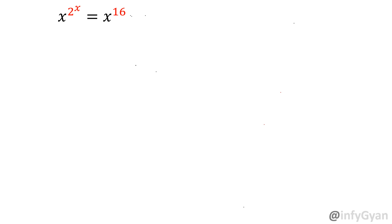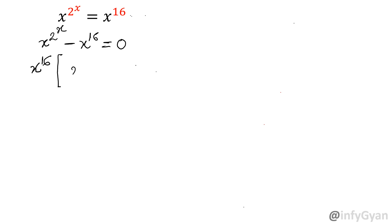I am going to take away x power 16 from both sides. So the equation will convert into x power 2 power x minus x power 16 is equal to 0. The left side would be x power 2 power x minus x power 16. Now let's take x power 16 common out, so it will become x power 2 power x divided by x power 16, minus 1, equal to 0.